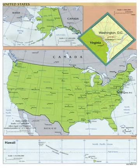The fifty states of the United States of America are listed with both the Postal Code abbreviation and the traditional abbreviation for each state. The fifty states can be divided into regions in many different ways. The continental United States typically refers to the main block of 48 states and their offshore islands, with the Atlantic Ocean to the east, Pacific Ocean to the west, Canada to the north, and Mexico to the south.